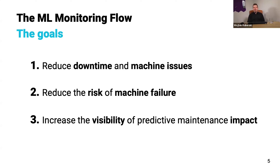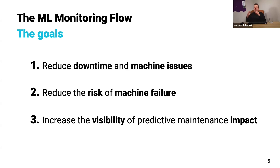For a predictive maintenance model, it's generally about reducing downtime and reducing the number of machine issues so we can maintain less often and more efficiently. I'm using the word 'machine' in an abstract term — it can apply to a machine that manufactures something, a wind turbine producing energy, or even a train that is operating. So it's a machine and its operation.